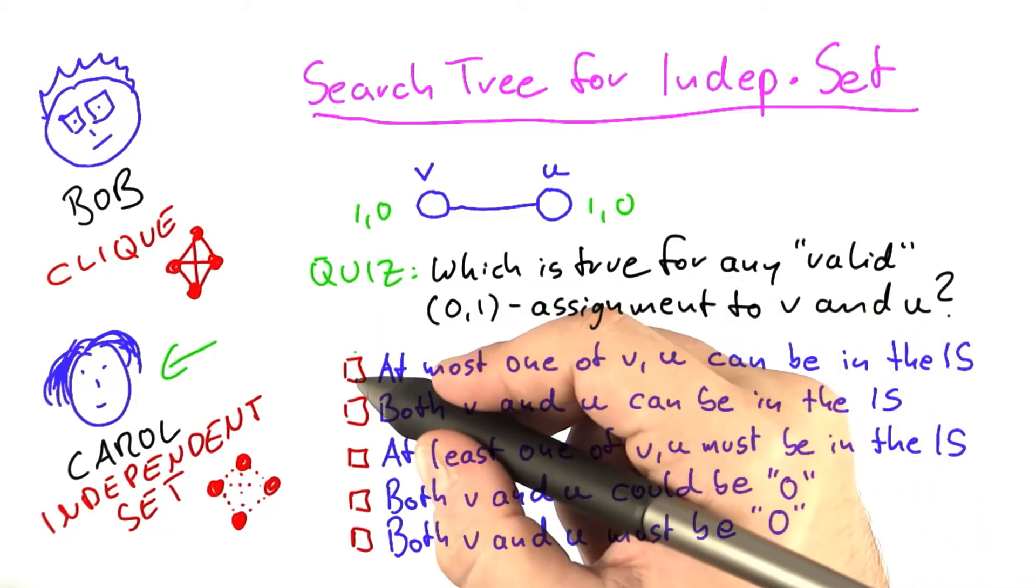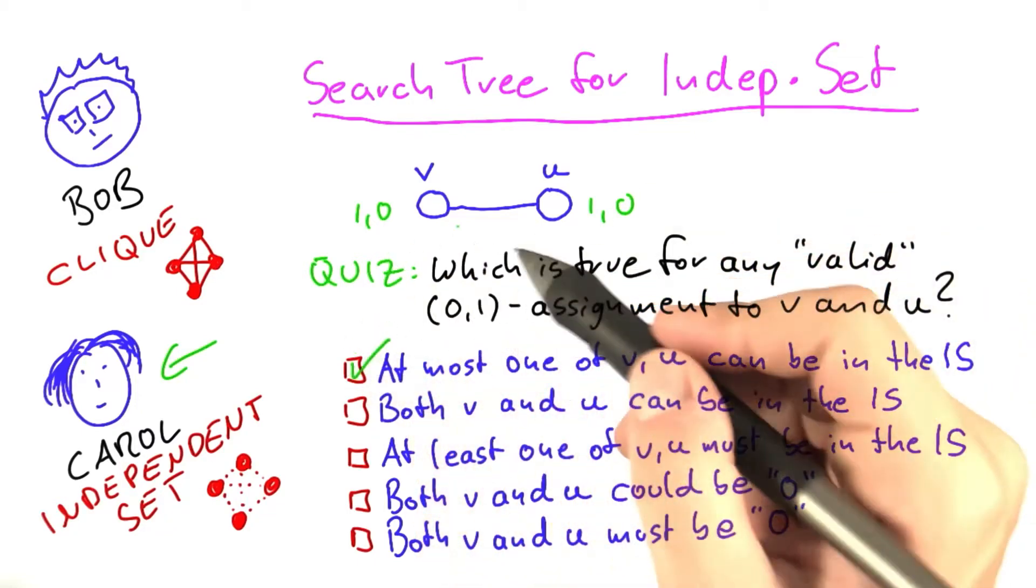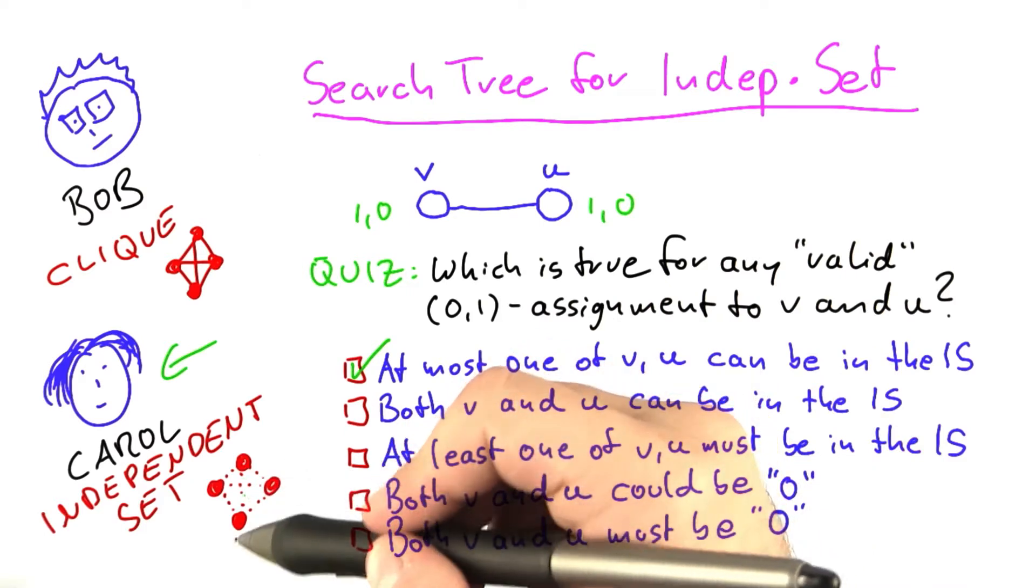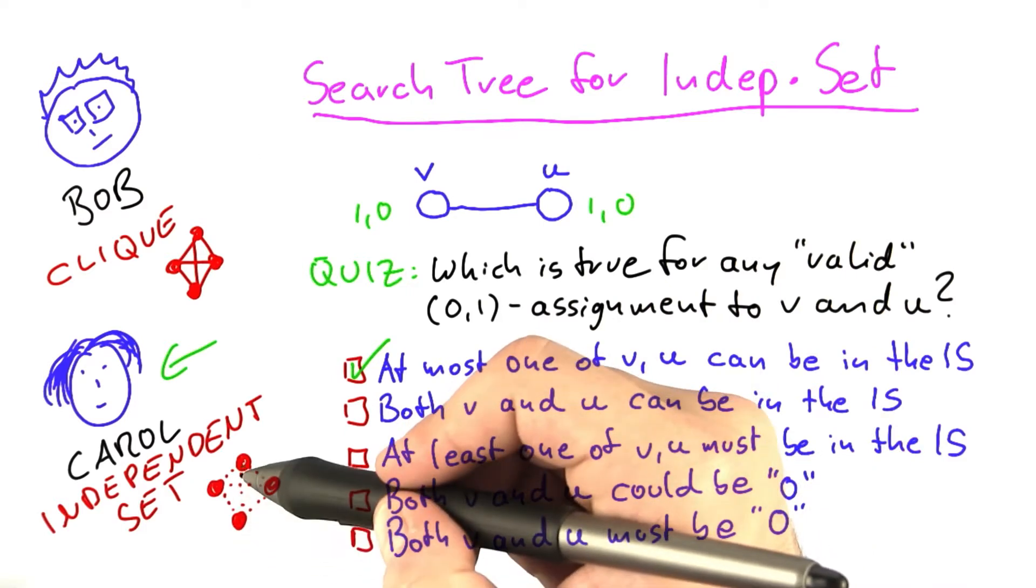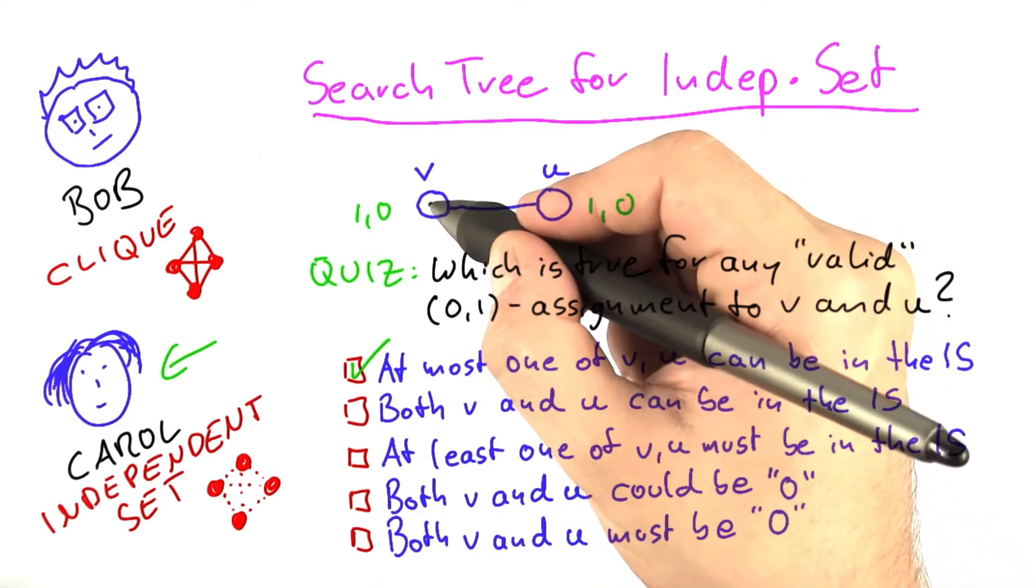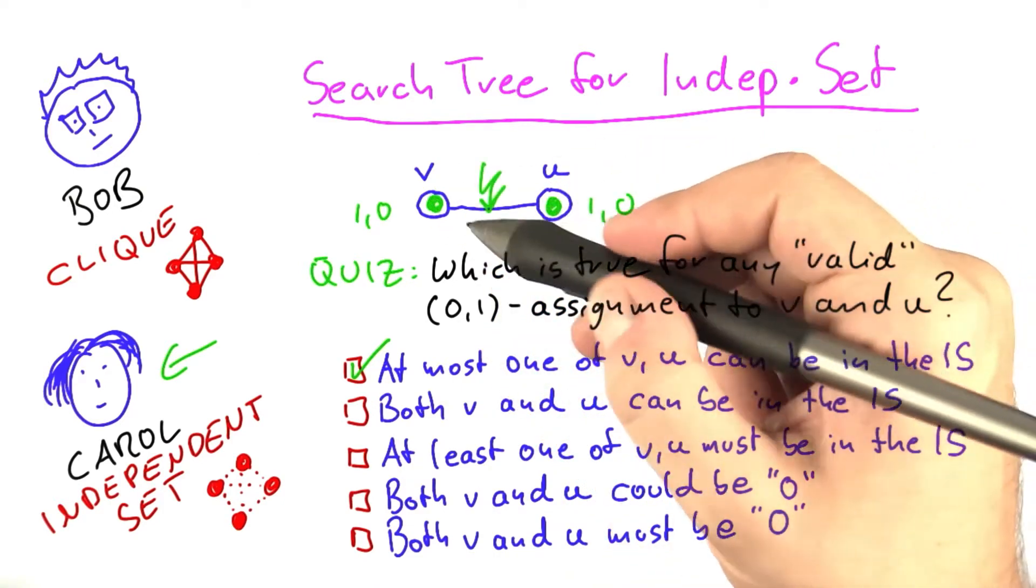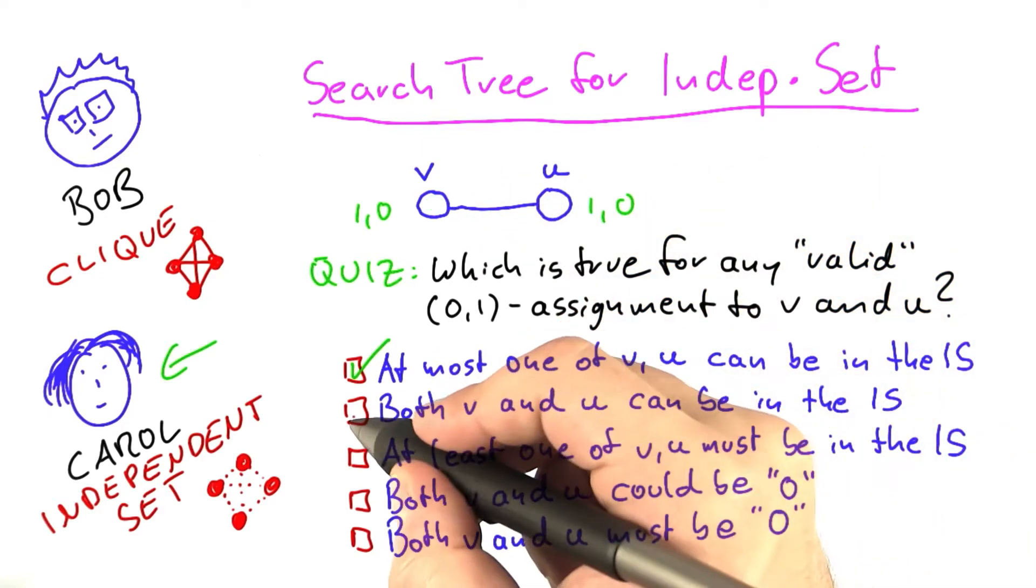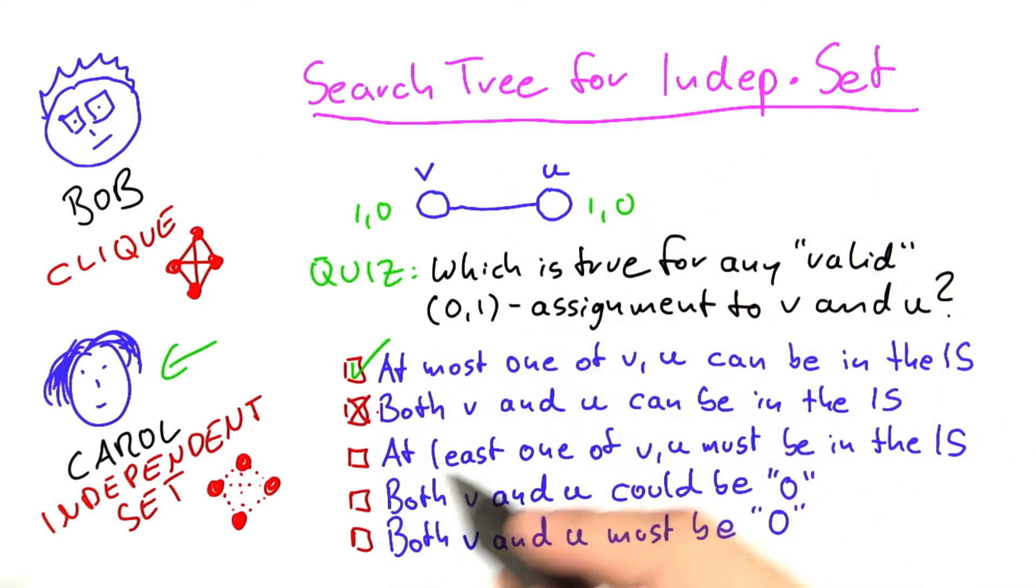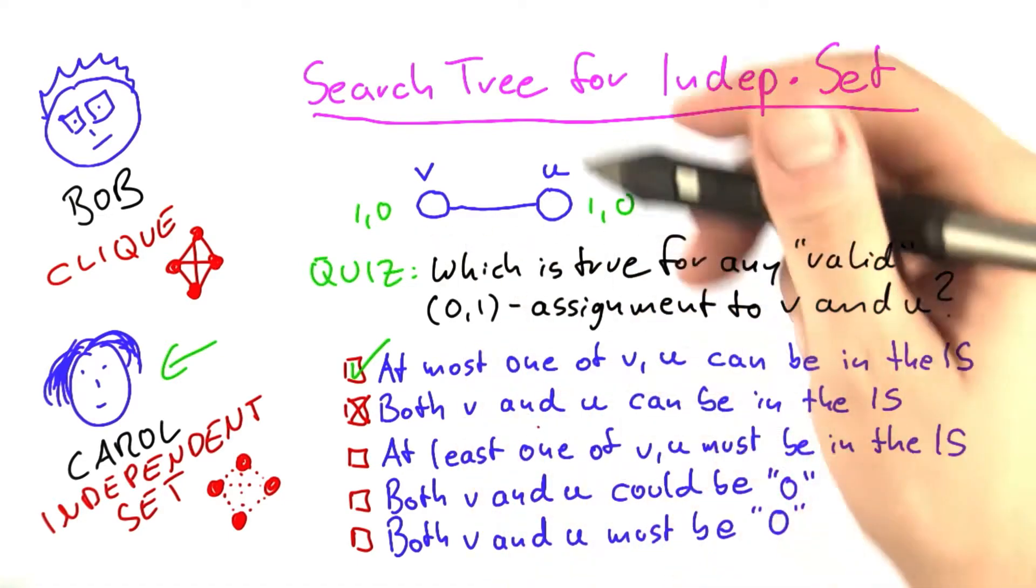The first answer I hope wasn't that difficult to find. This one is true. The rules of an independent set are that two vertices cannot be connected by an edge if they are part of the independent set. That means if we put this one into the independent set as well as this one here, then we would have an error, which automatically also answers the second question.